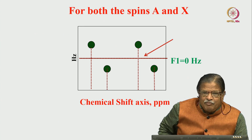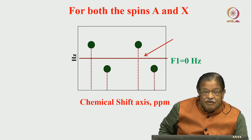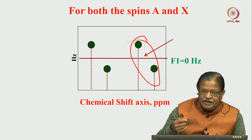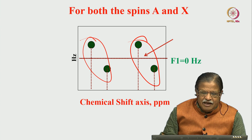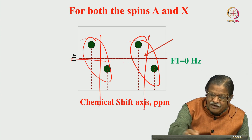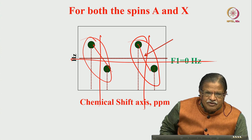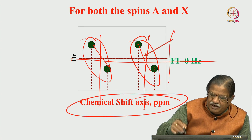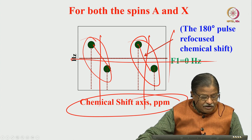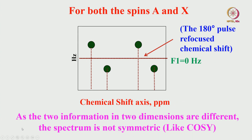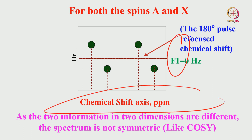For both coupled spins present together, each doublet is centered at its chemical shift with peaks at ±J/2 in the F1 dimension - one peak to the right of center, one to the left. In F2 (direct dimension), both J and chemical shift are present. In F1 (indirect dimension), only J-coupling appears as chemical shifts are refocused. The spectrum is not symmetric - unlike COSY or TOCSY - because the two parameters are completely different: J-coupling is of the order of 10-15 Hz, while chemical shift in the other dimension is on the order of several thousands of Hz.